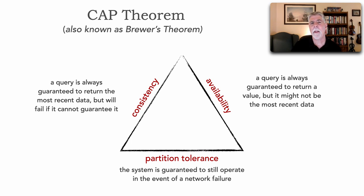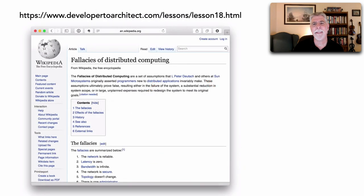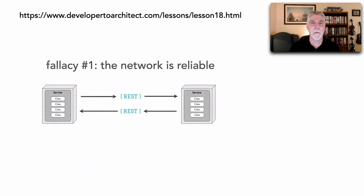But it's kind of interesting. Let's focus on the partition tolerance piece and go back to Lesson 18 of Software Architecture Monday, where I talked about the fallacies of distributed computing. A fallacy is something that we believe to be true, but it really isn't. Specifically, I want to look at fallacy number one: the network is reliable.